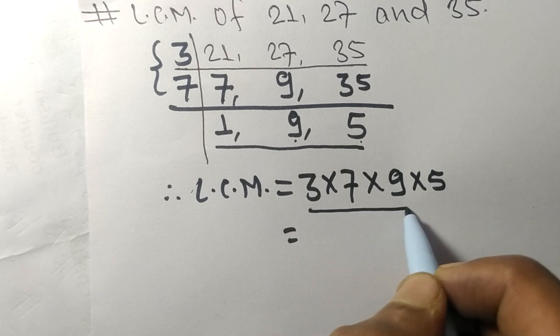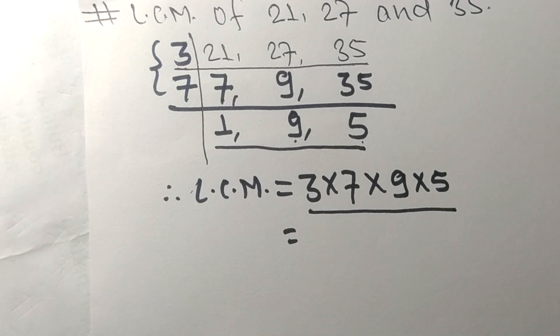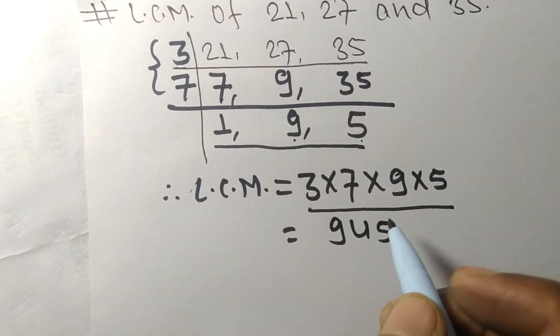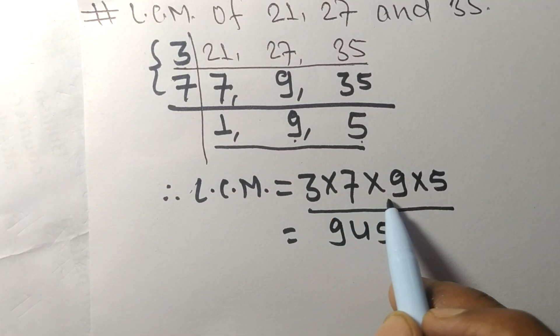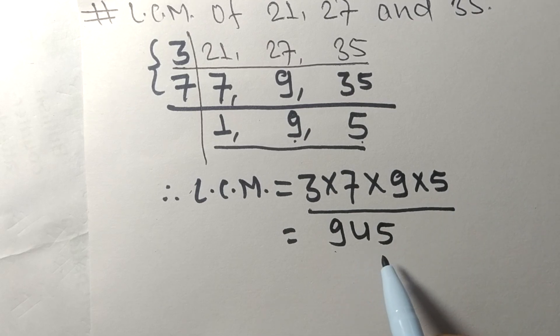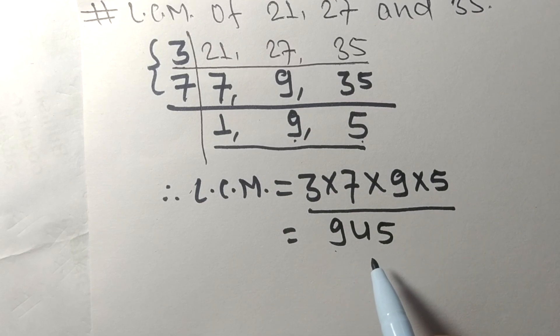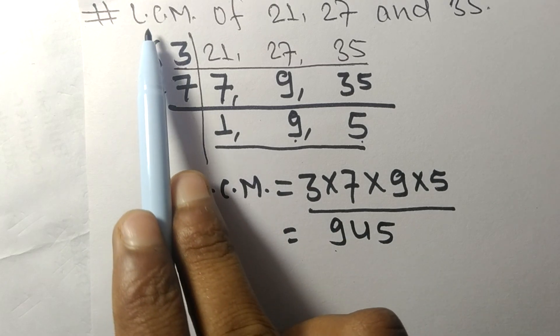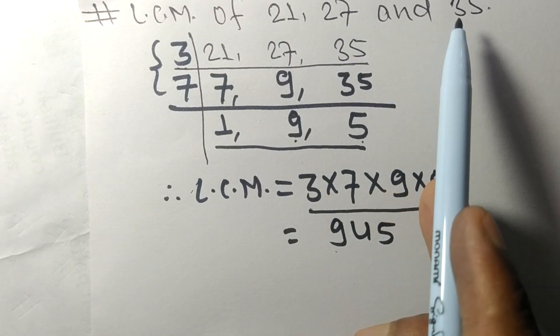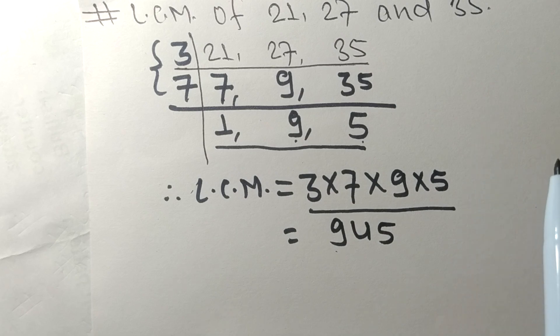By multiplying all these numbers we get 945. So 945 is the LCM of 21, 27, and 35. That's all for today and thanks for watching.